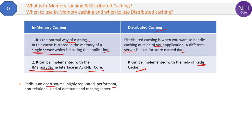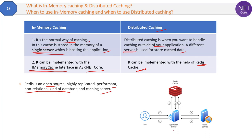Redis is an open source, highly replicated, performant, non-relational kind of database and caching solution. You don't need to remember all those details — just remember that Redis is a distributed caching server. As shown in this diagram, the application server is separate from the Redis cache server. Redis gets frequently requested data from the database and serves it to the application server very quickly — similar in concept to how a SQL Server works.